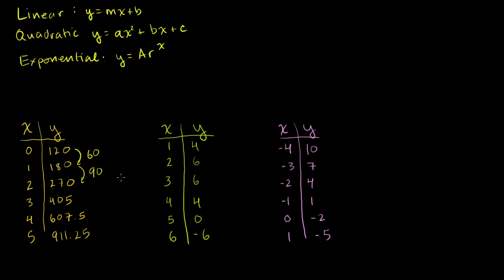Looking at the second dataset: our first change in y is 2, then the next change in y is 0. Once again, not linear. As we increment x by a constant amount, y does not increase or decrease by a constant amount. So this one is also not linear.